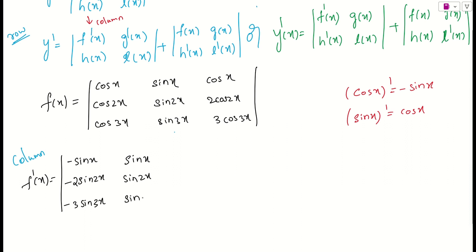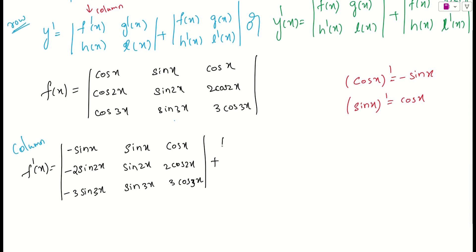There is no change in the second column or the third column for the first term. For the second term, we differentiate the second column. The derivative of sin x is cos x, sin 2x derivative is cos 2x times 2, and sin 3x derivative is cos 3x times 3. The first and third columns remain as they are.